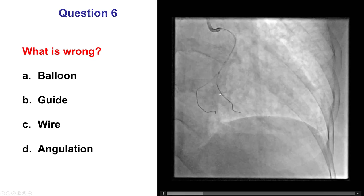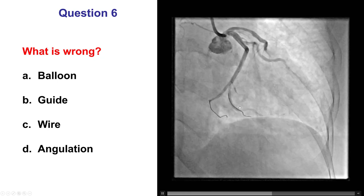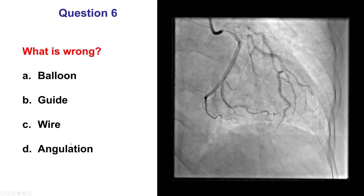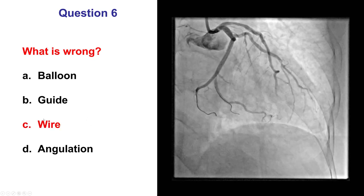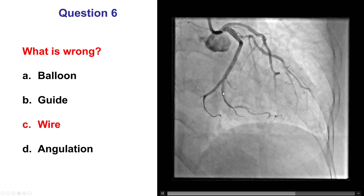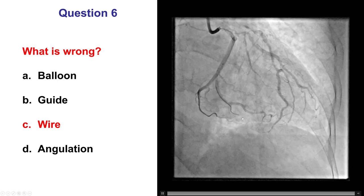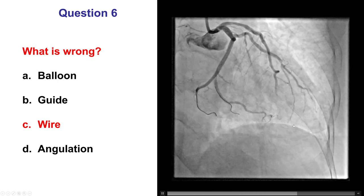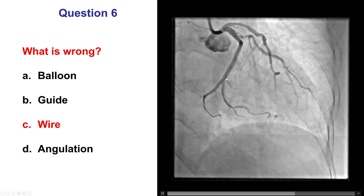Now we have wires in both vessels and restoration of antegrade TIMI 3 flow in OM2, but there is something wrong. The question is whether the issue is the balloon, the guide, the wire, or the angulation. The answer is the guide wire. Looking at the OM2 wire, it is actually in a small side branch of the second obtuse marginal branch. Although this often does not cause problems, it can cause distal vessel perforation, which can be challenging to treat. The next step is to reposition the wire further down into the OM2, which will also facilitate stent delivery.